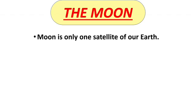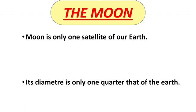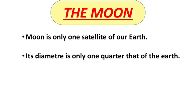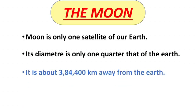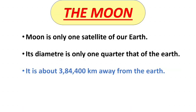The Moon is the only satellite of our Earth. Its diameter is only one-quarter that of the Earth, and it is about 384,400 kilometers away from the Earth.